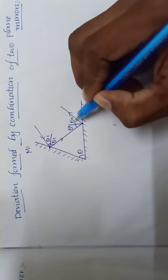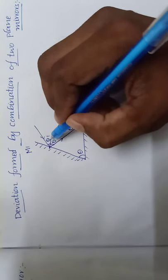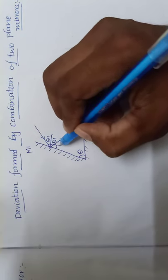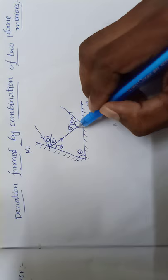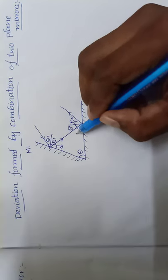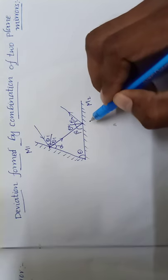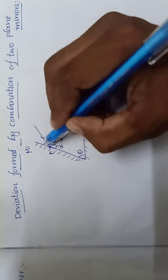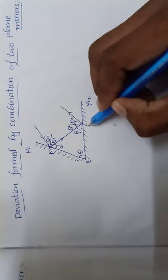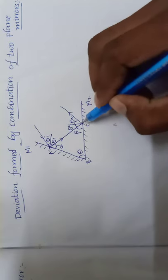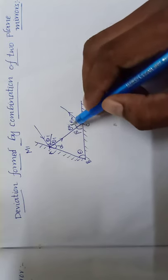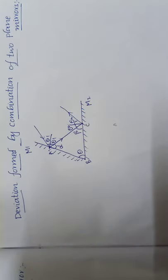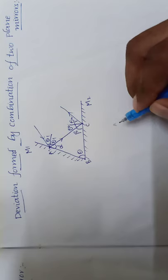And first mirror, the angle of glancing is alpha, and second mirror angle of glancing is beta. So if you see, this ABC is a triangle. The sum of angles of triangle is 180: alpha plus beta plus theta is equal to 180.